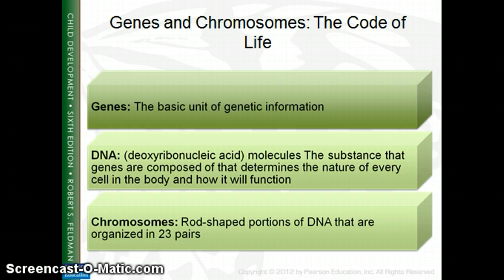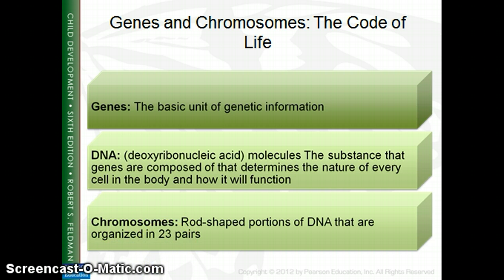Your DNA is on every cell in your body — every hair follicle, every skin follicle, your blood — your own DNA, which is the combination of genes you get from your parents. Humans have over 100,000 genes, and they're arranged in 23 pairs of chromosomes, so you have 46 chromosomes: 23 from mom and 23 from dad.